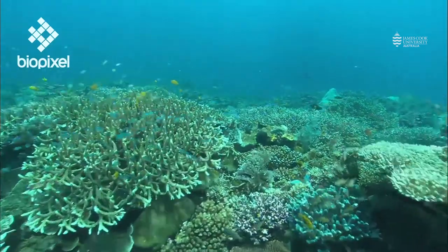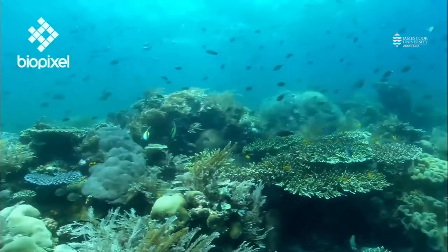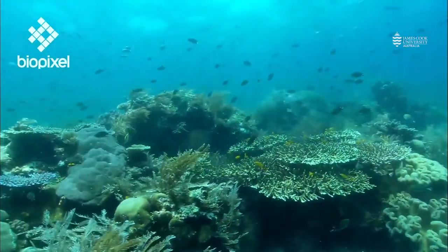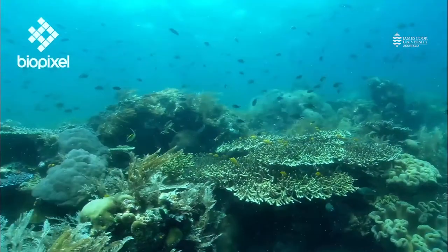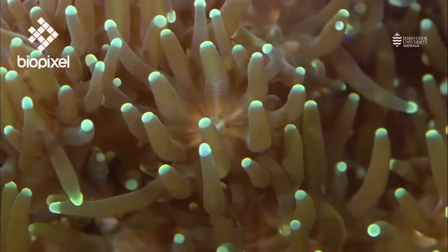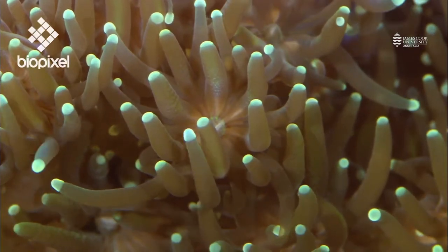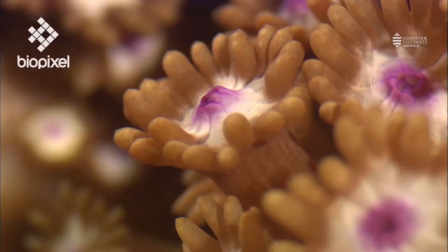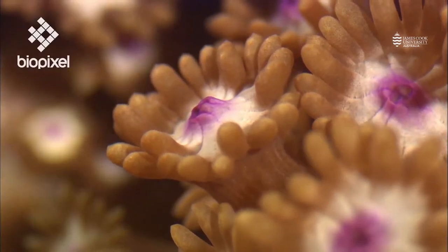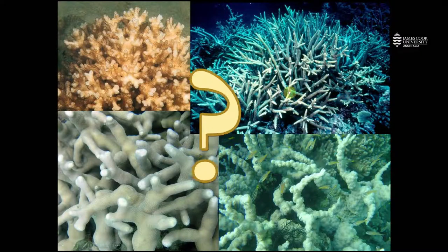Now that we've looked at skeletons of these different coral growth forms, let's take a look at what they look like in the field with their tissues intact. I won't tell you what these morphologies are, but you can discuss this with your teachers and friends. Let's look at the way these colonies are growing.